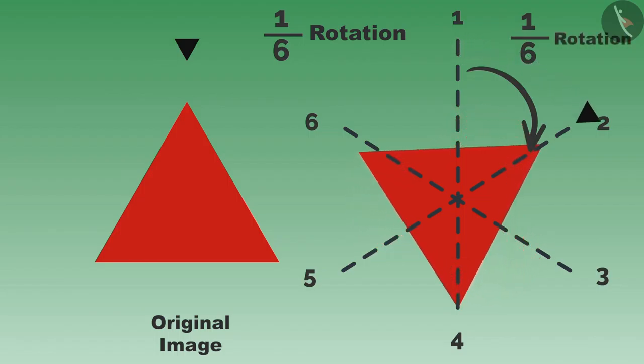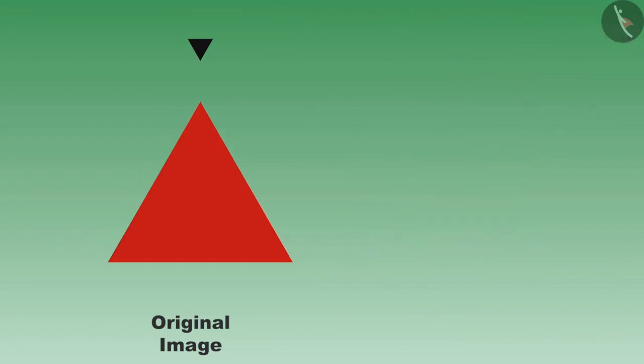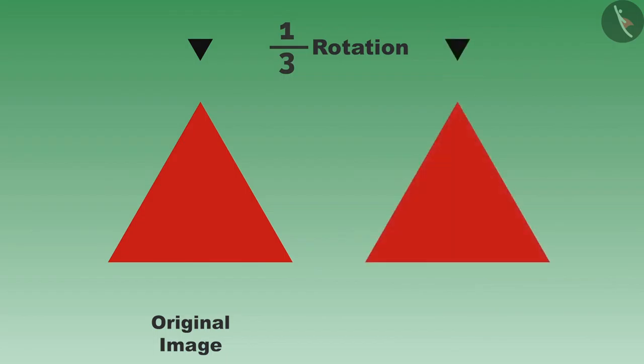If we have to do one-third rotation, then we will divide it into three equal parts across the center. Draw the lines in this way. You can see that three lines are passing through the center of this picture.